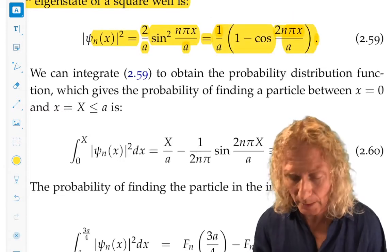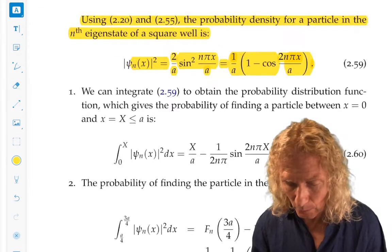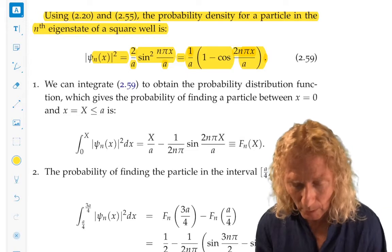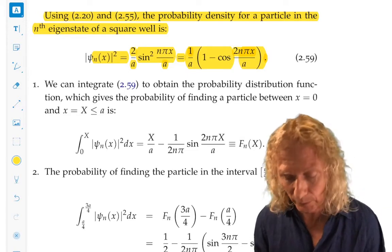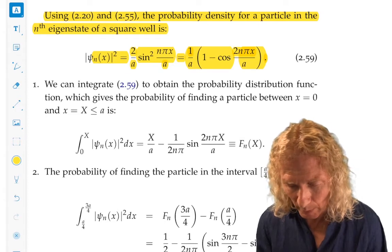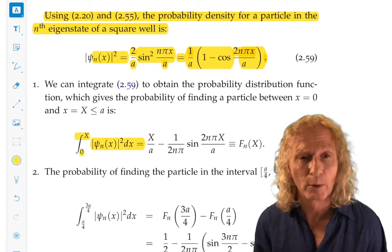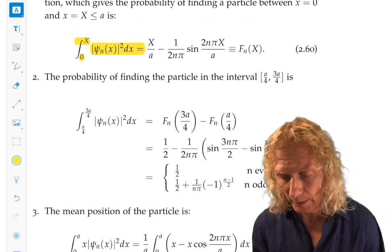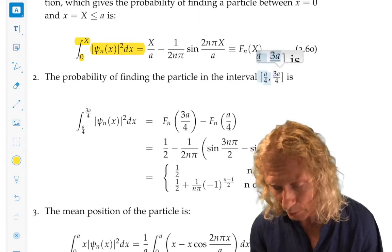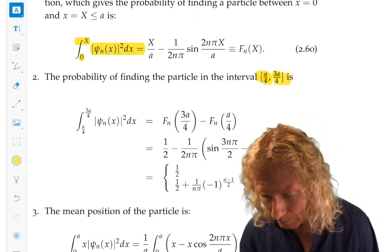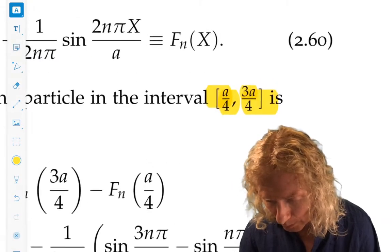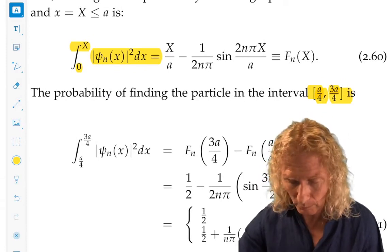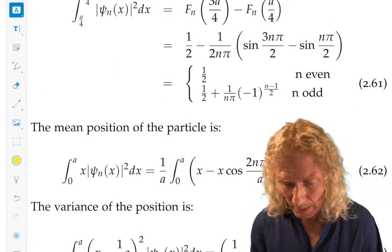We'll come back to that and look at more general eigenstates in a little bit. But the probability density corresponding to the nth eigenstate is given by 259. We use a little trig identity on the right. And therefore, if we want to compute the probability of finding a particle between x equals zero and some other value uppercase X less than or equal to a, we just integrate the probability density from zero to uppercase X. To be more specific, if we want to look at the probability of finding the particle in a specific interval, say between a over 4 and 3a over 4, we just integrate the probability density between those two values and we get an interesting expression.